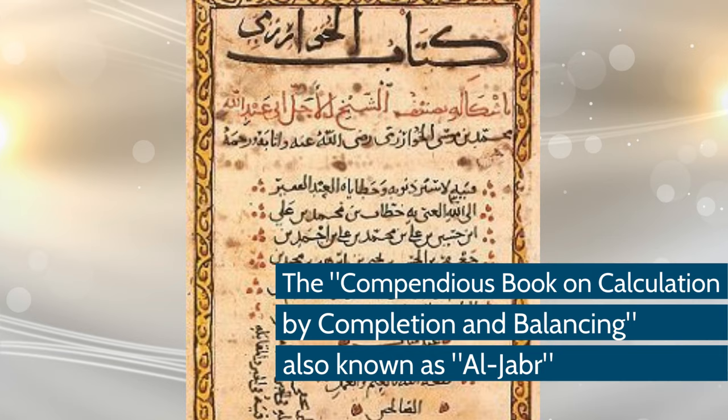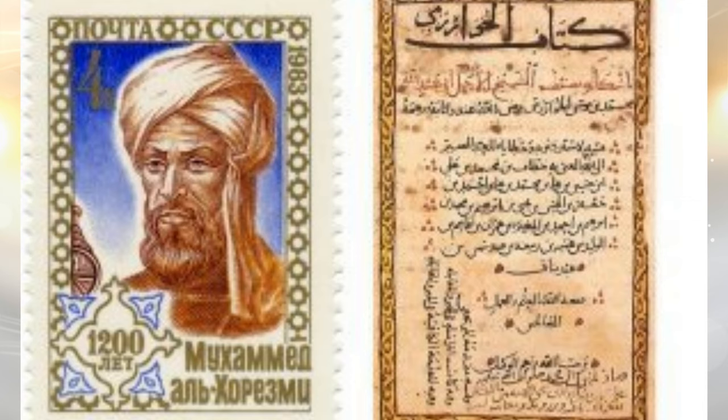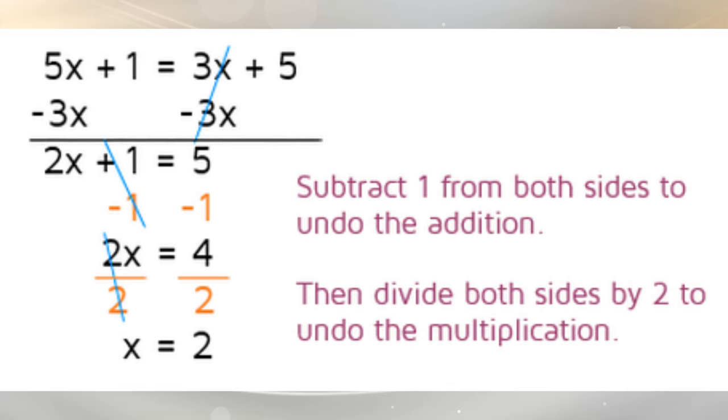It provided an exhaustive account of solving polynomial equations up to the second degree and discussed the fundamental methods of reduction and balancing, referring to the transposition of terms to the other side of an equation, that is the cancellation of like terms on opposite sides of the equation.